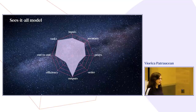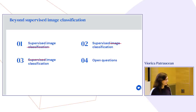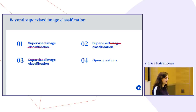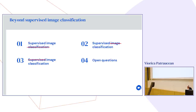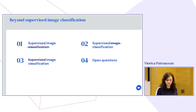Today I will guide you to explore this space. We are going to take 'supervised image classification' and try to replace each word. First, we replace 'classification' to see what other tasks exist. Then we replace 'image' to see what other inputs we can use. Then we replace 'supervised' to go beyond strong supervision — I'll talk about self-supervised learning specifically. We'll end with a few open questions in the field.